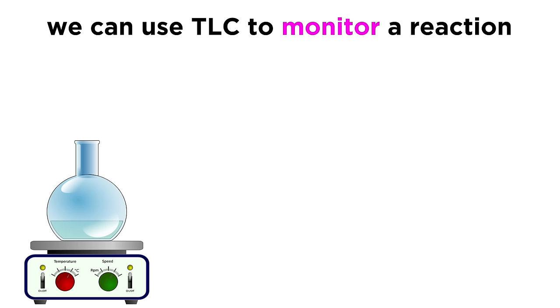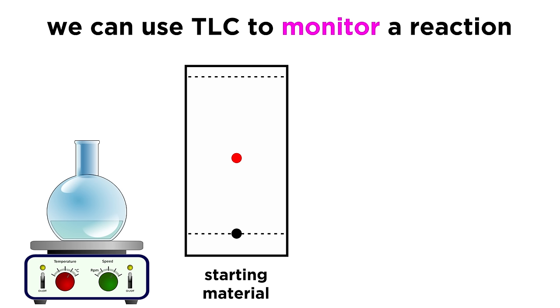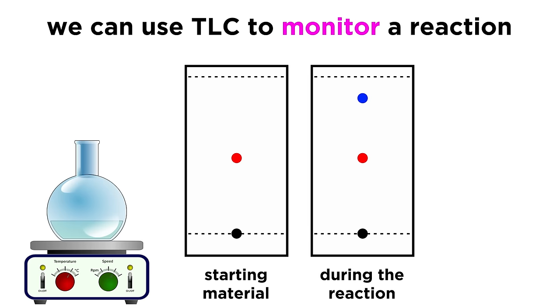We can use TLC to monitor a reaction. Say we are performing a reaction where the reactant and product have significantly differing polarities. If we spot a plate with the solution in the reaction flask before adding any reagents, we can get the RF for the reactant. Then once the reaction has proceeded for some time, we can spot another plate and develop it. If we get that same spot again, along with a new spot that has a totally different RF, we will know that some product has formed, but some reactant still remains.